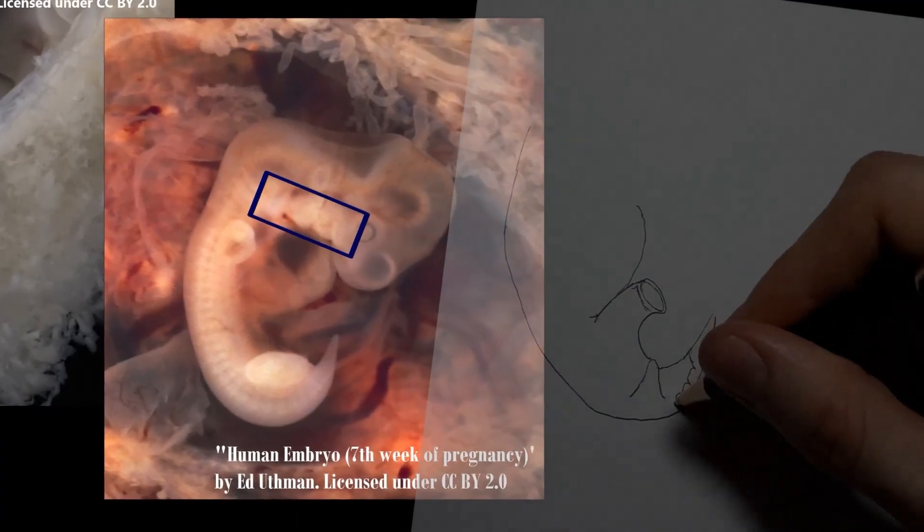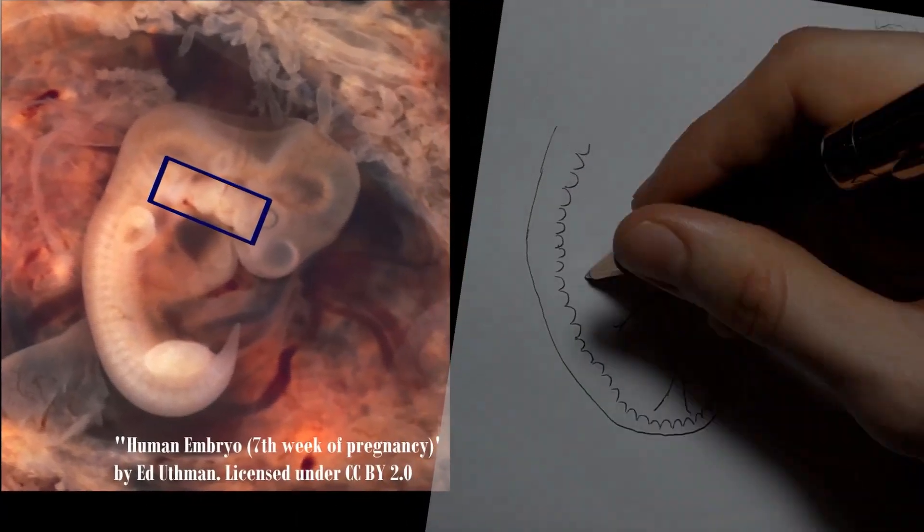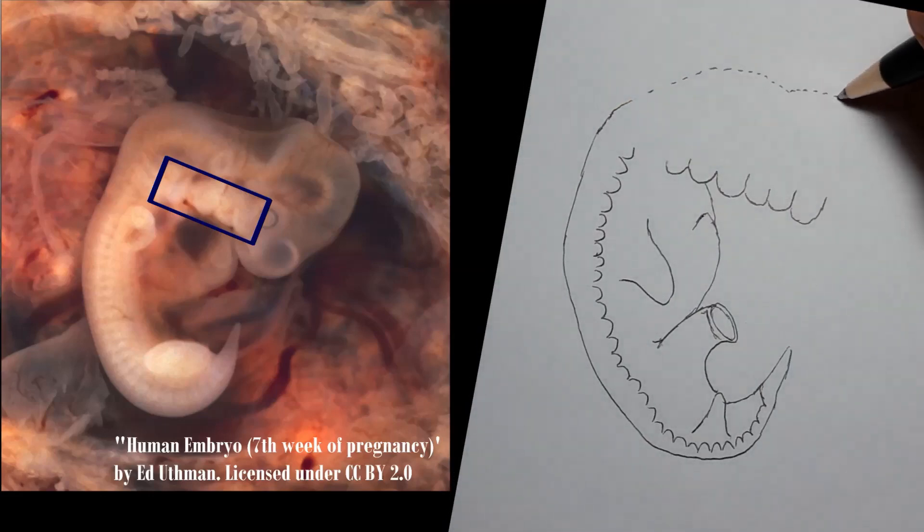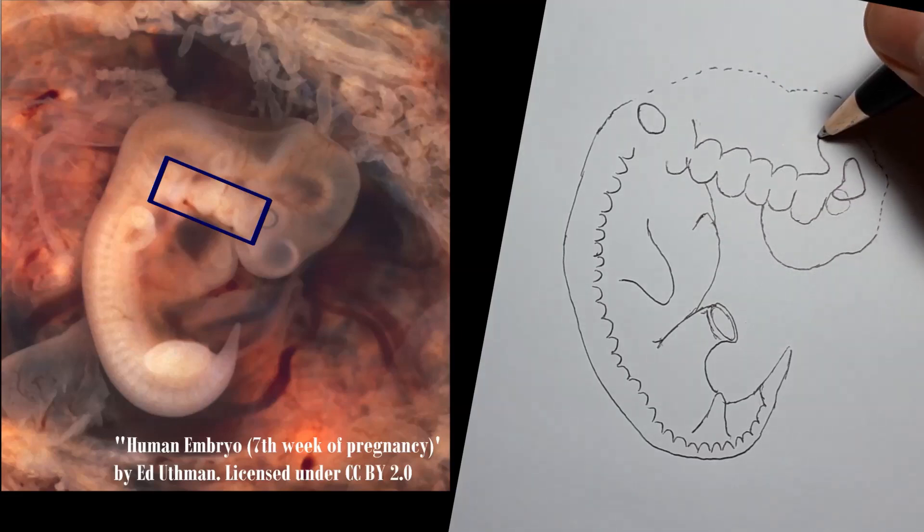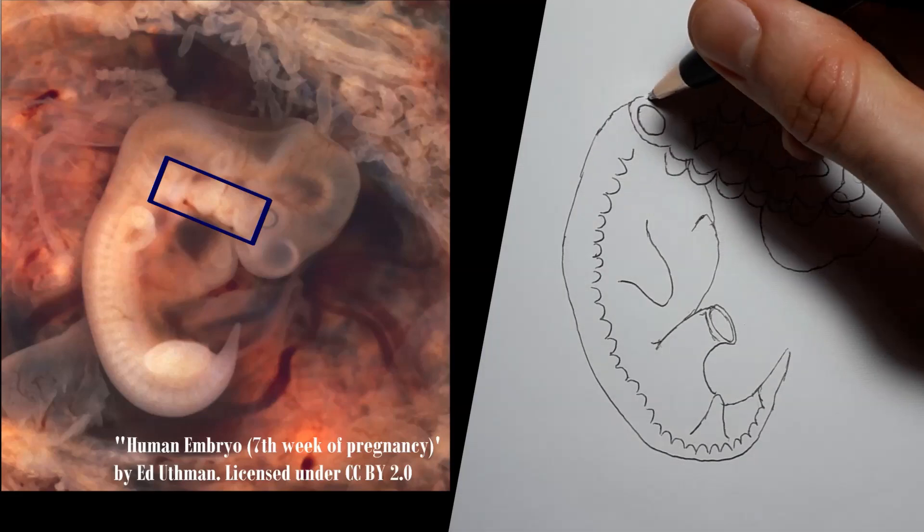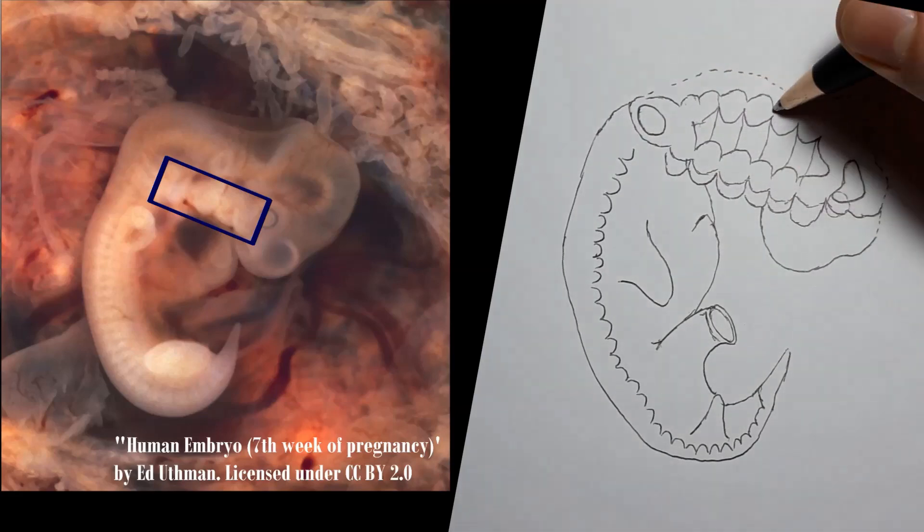However, patients with deletions of all the genes on region 11.2 of the long arm of chromosome 22, such as those with DiGeorge syndrome, can't adequately develop pharyngeal pouches 3 and 4. If you have problems with developing an embryological structure, you will also face malformations in the organs that should have arisen from them.